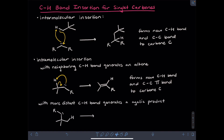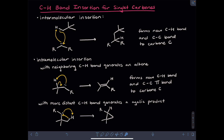This type of CH bond insertion can also occur for singlet carbenes using more distant carbon-hydrogen bonds. Here is another carbene, and instead of looking at a neighboring carbon-hydrogen bond, I'm looking at a carbon-hydrogen bond one further position away. The first curved arrow uses the carbene lone pair to deprotonate the proton of the CH bond. Then instead of forming a pi bond, I would take those electrons from the CH bond and bring them to the carbene center itself, similar to the intermolecular case. In the product, the carbene carbon has a new hydrogen and a new carbon-carbon bond. Because the CH bond was at position 3 relative to the carbene center, a three-membered ring is formed.